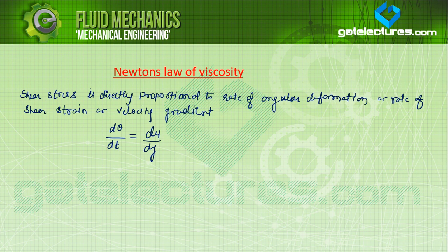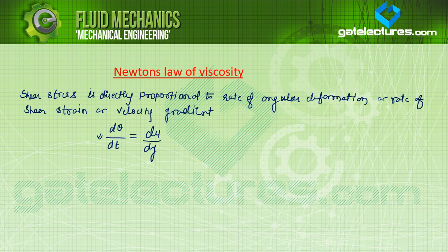However small the shear force may be — shear force is acting on a plate, area is constant, so shear stress is force per unit area — however small the shear force we apply, the deformation that occurs is continuous deformation with respect to time, and that is called flow. That flow is occurring due to angular deformation, due to rate of angular deformation. According to Newton's law of viscosity, shear stress τ is directly proportional to dθ/dt.